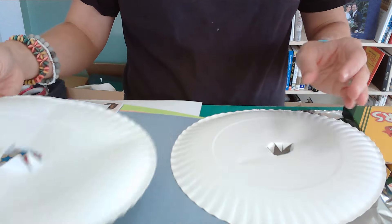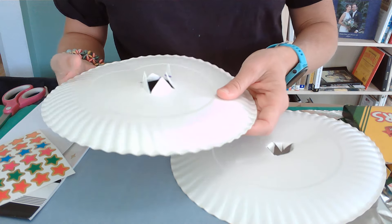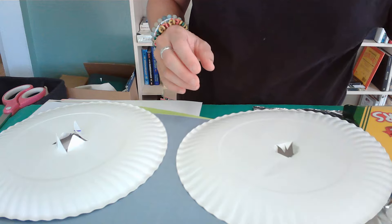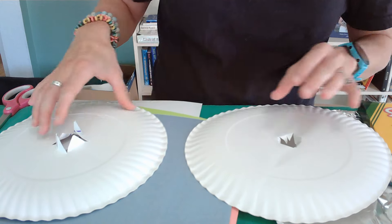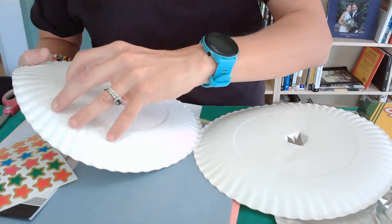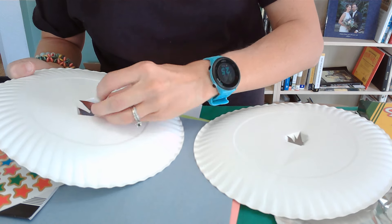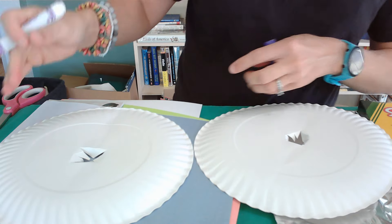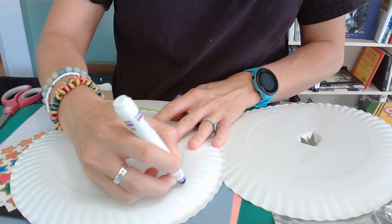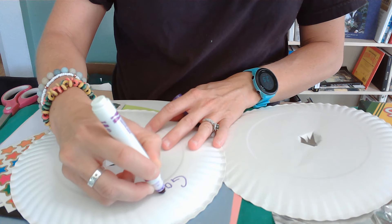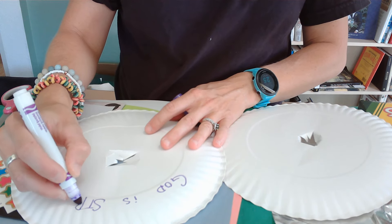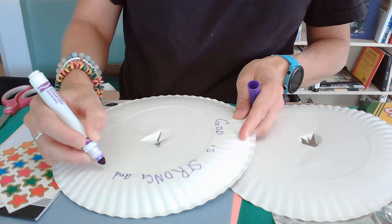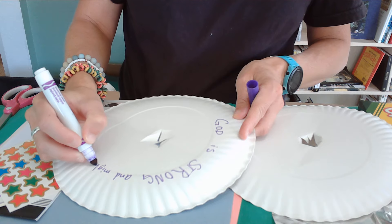So I'm going to decorate my plates first and then attach them to the paper towel tube. So over here I'm going to mark down some verses and those verses will remind me that God is strong and mighty.